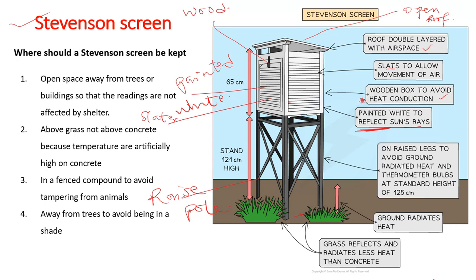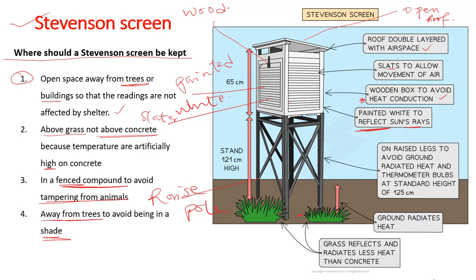You should also understand where the Stevenson screen should be kept — this question comes up a lot in IGCSE geography. A Stevenson screen should be kept in an open space, usually away from trees or buildings, so that readings are not affected by shelters. It should be kept above grass, not on a concrete floor, because temperatures are artificially high on concrete. It should be in a fenced compound to avoid tampering from animals, and kept away from trees to avoid being in shade, which would affect readings.